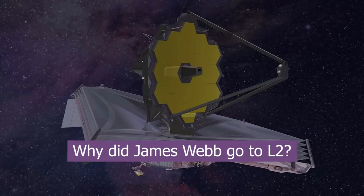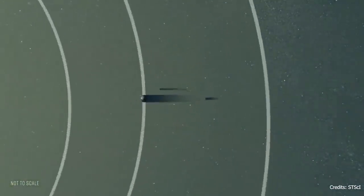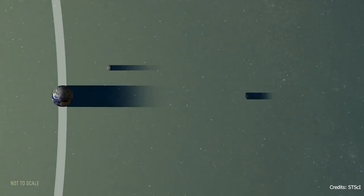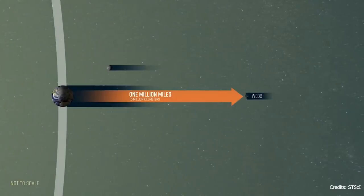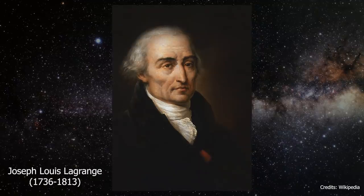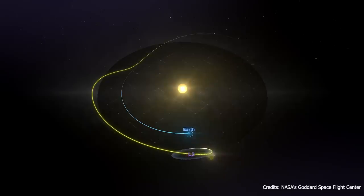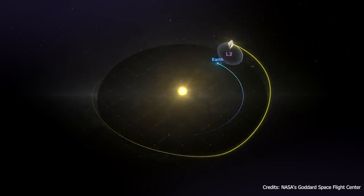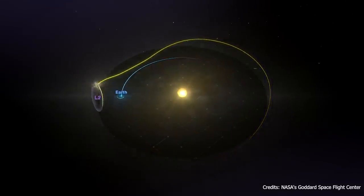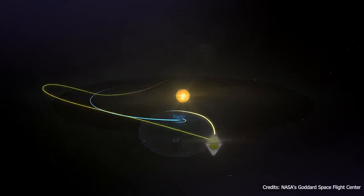Why did James Webb go to L2? As we've already mentioned, James Webb will operate 1.5 million kilometers away from Earth at the second Lagrange point, or L2. What is special about this point? Lagrange points are spots of gravitational equilibrium in space. At the second Lagrange point, James Webb will stay in a fixed position relative to the Earth and the Sun, and orbit the Sun in synchrony with the Earth.